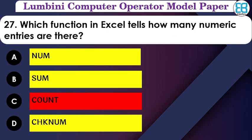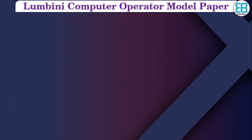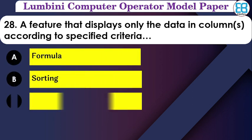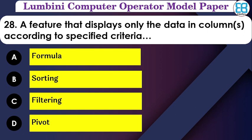Which feature displays only data in a column according to specific criteria? The options are: formula, sorting, filtering, pivot. The correct option is filtering — filtering displays data based on specific criteria.